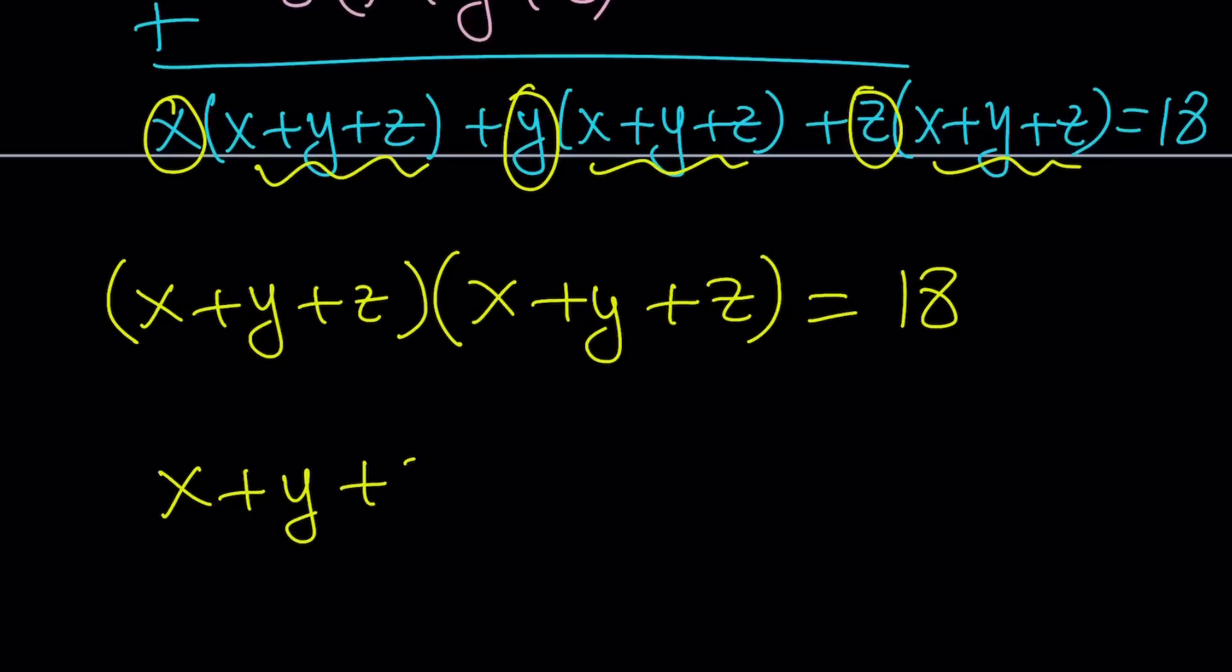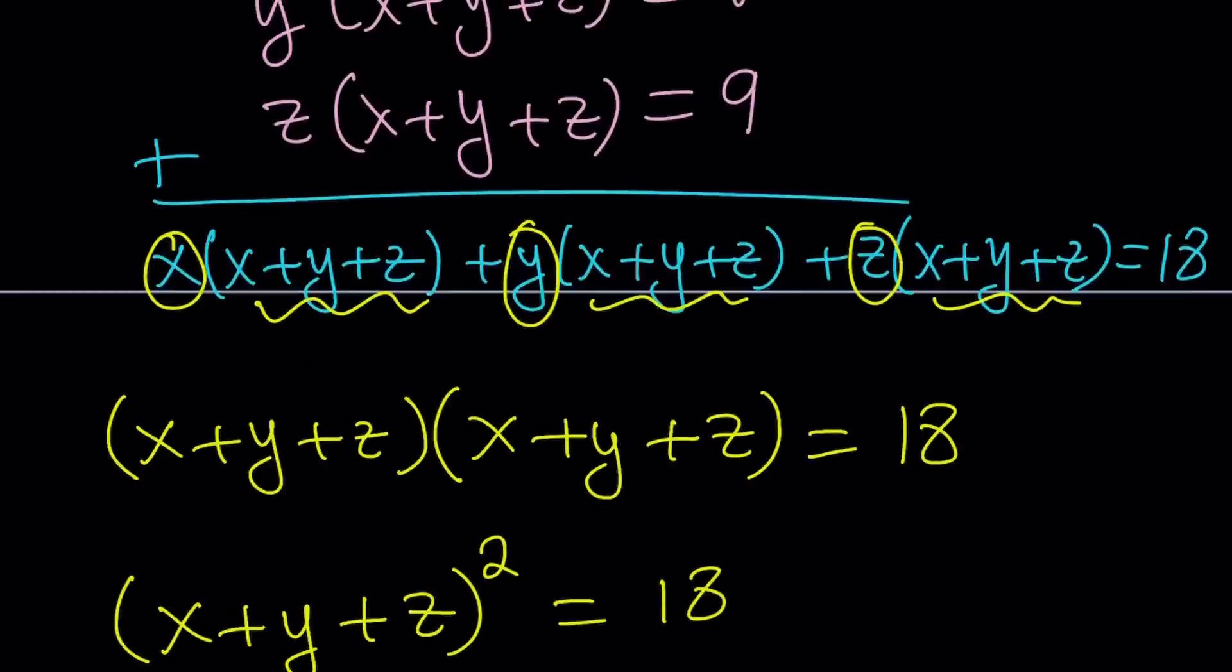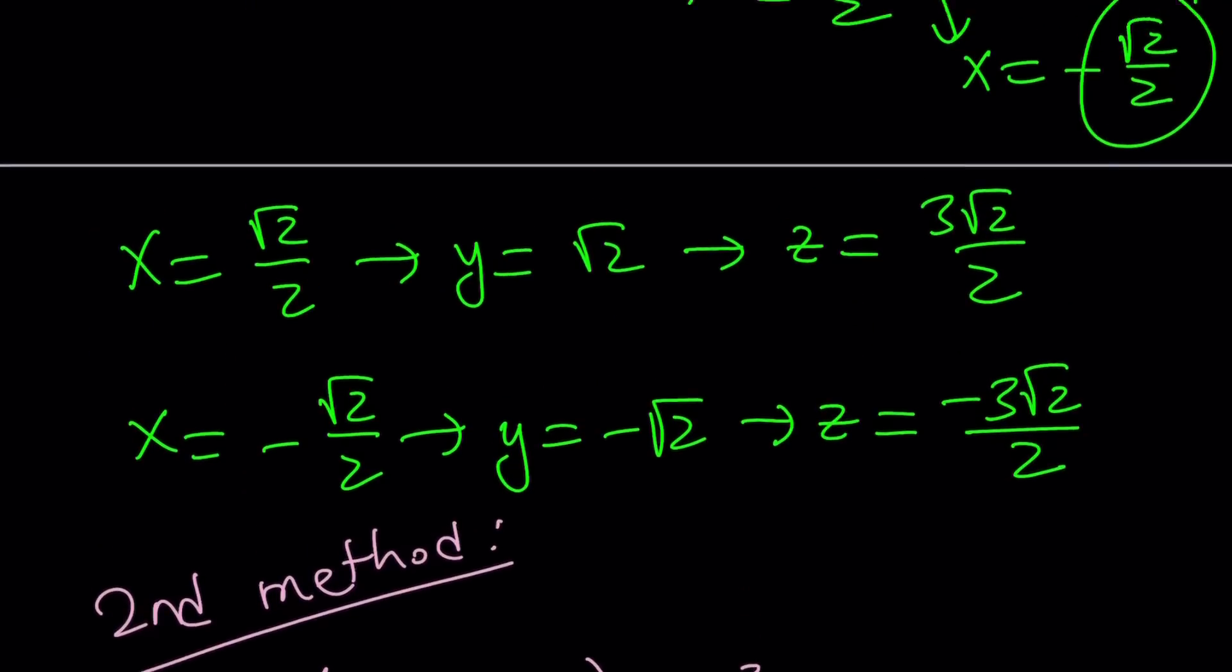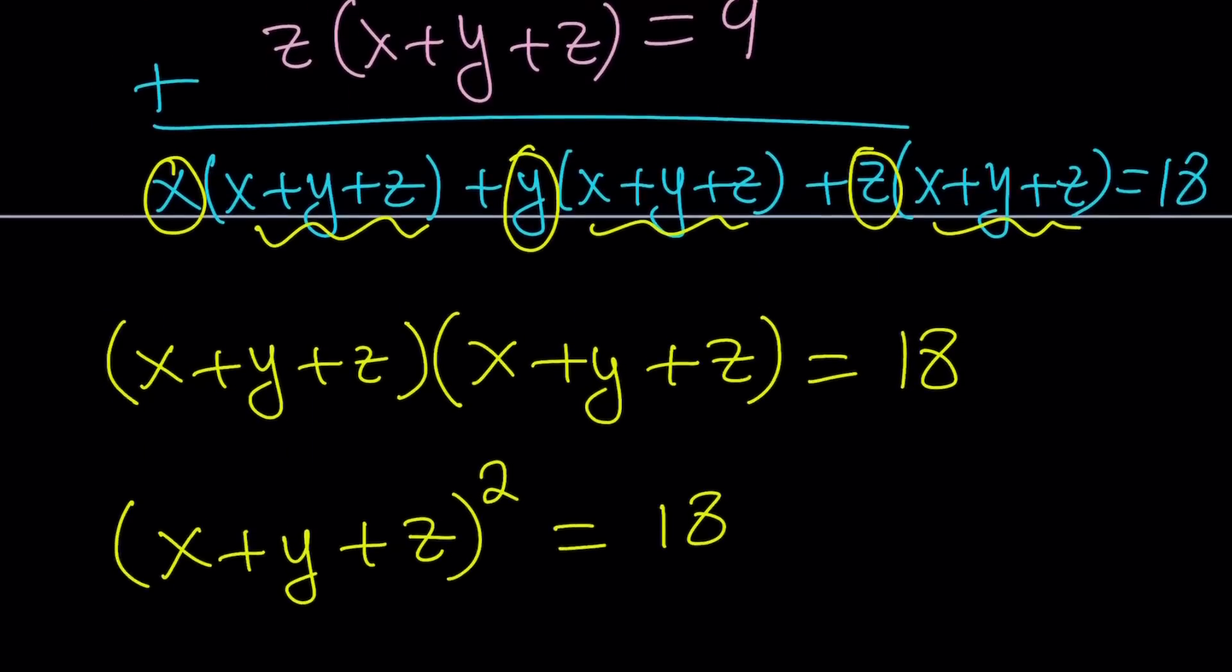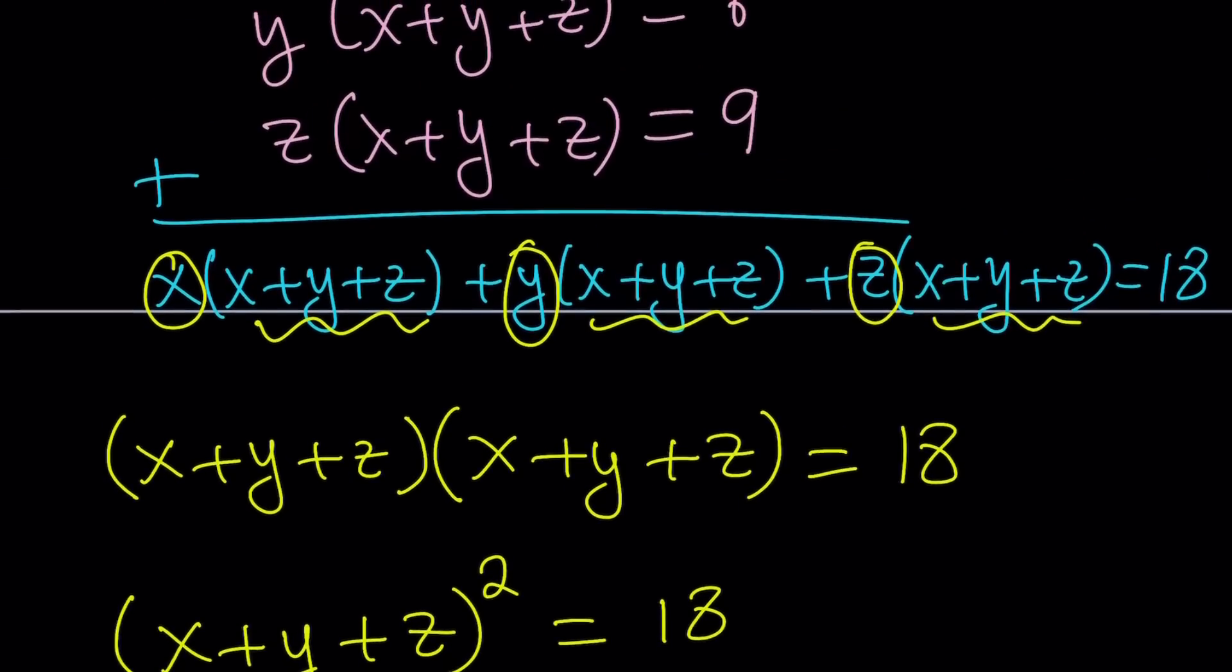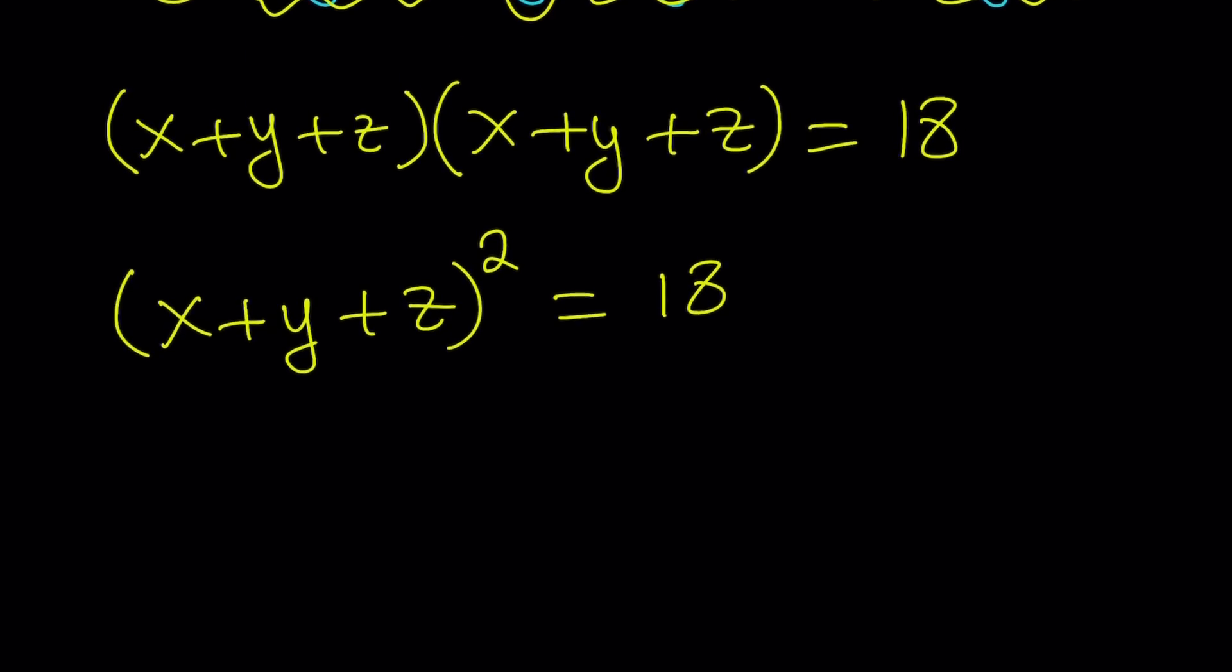x plus y plus z is squared equals 18. Now, this is a different method, I think, because we're finding x plus y plus z first. Remember, in the first approach, we found x first, and then we found y and z. So, that's why I think this method is very different from the first one.